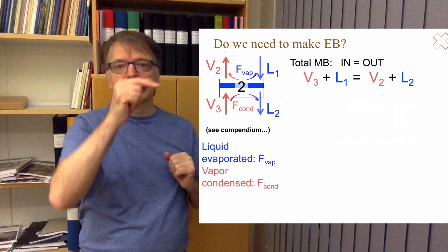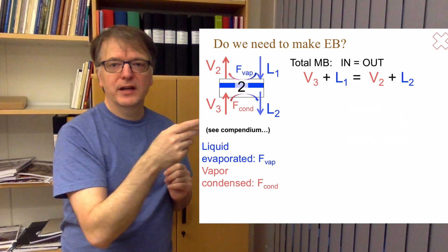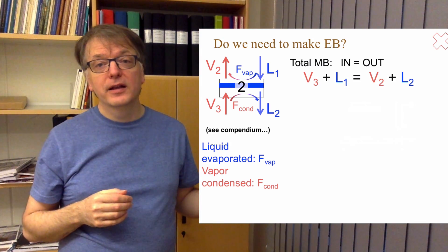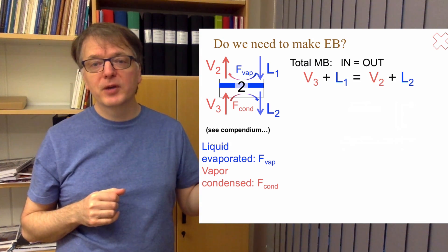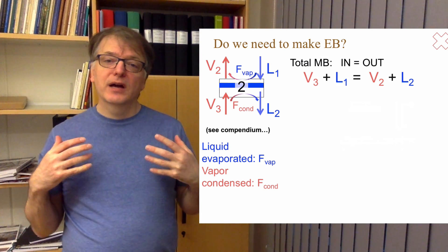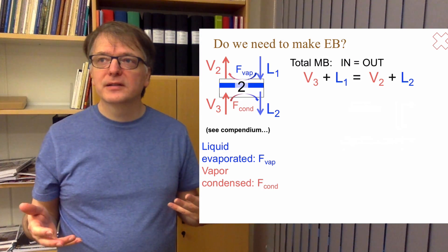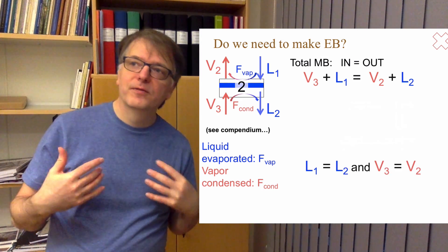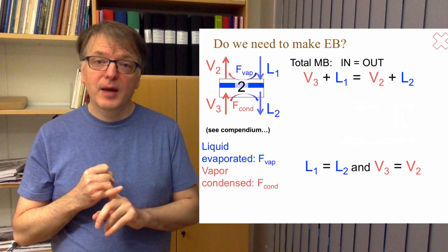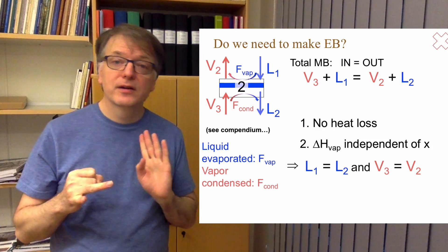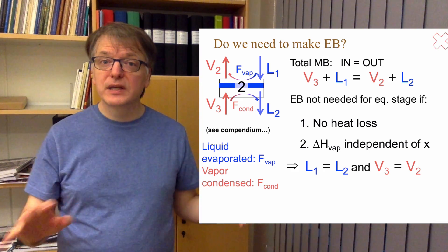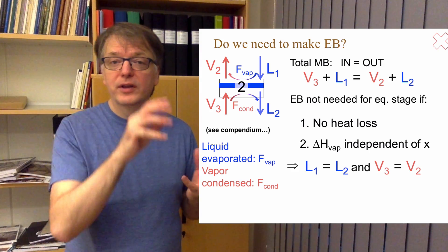You can think of this as the liquid coming down, where a fraction of that is evaporated — call that F_vap — and a fraction of the vapor coming up is condensed — also call that F_vap. If those two have the same size, then L1 equals L2 and V3 equals V2. That happens when we have no heat losses and the evaporation enthalpy is independent of composition, in which case we don't need to do any energy balances for the equilibrium stage.